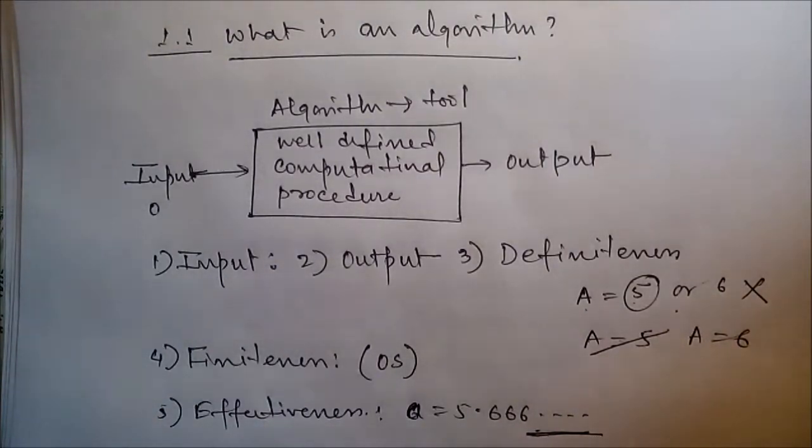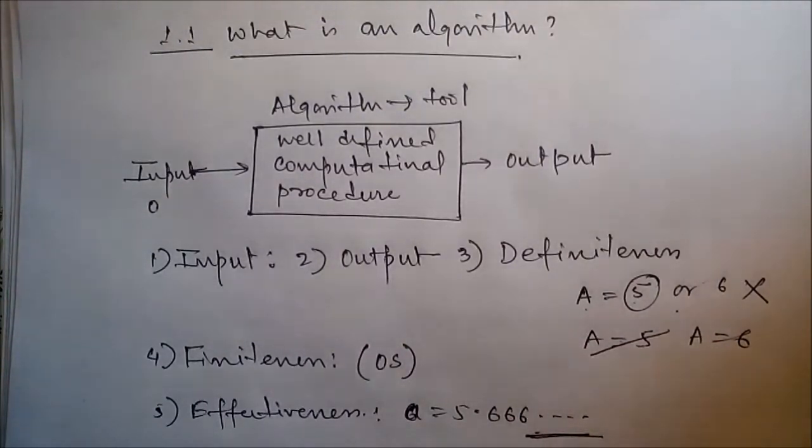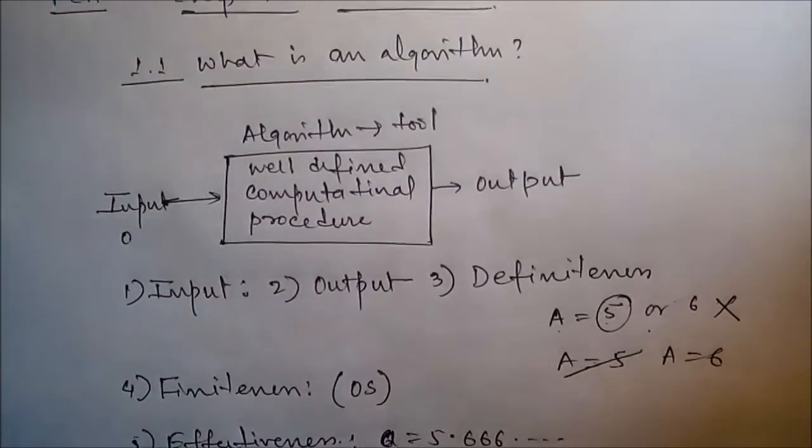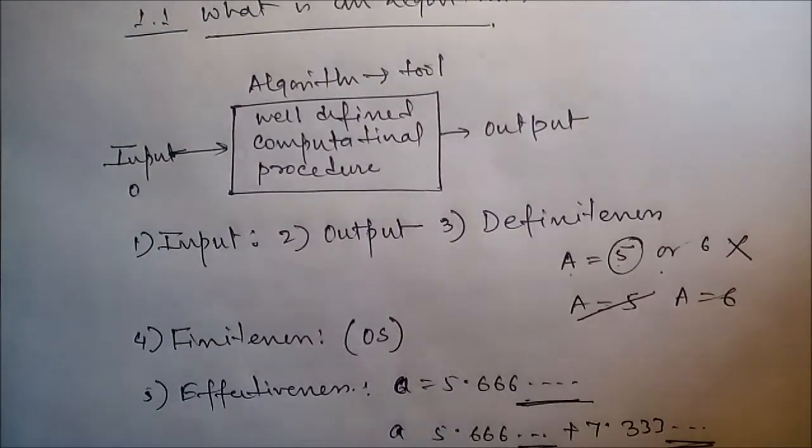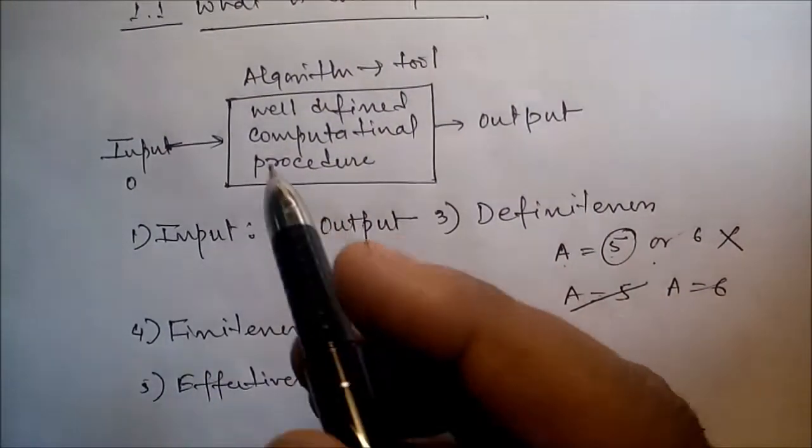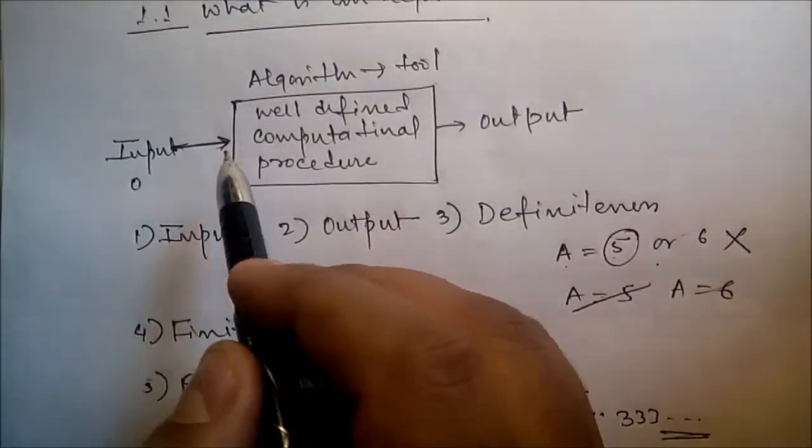An algorithm is thus a sequence of computational steps - this point is very important - that transform the input into the output. Now we can also view an algorithm as a tool for solving a well-specified computational problem. The algorithm describes a specific computational procedure for achieving that input-output relationship.